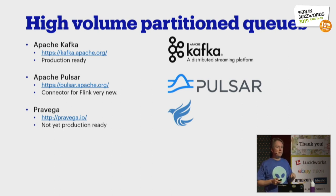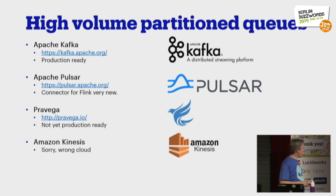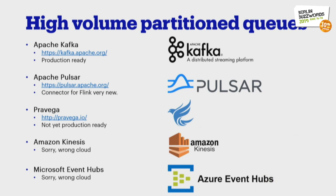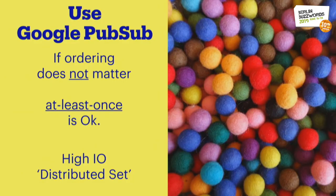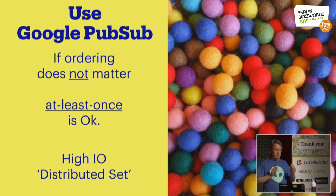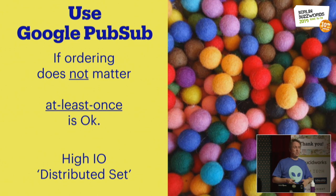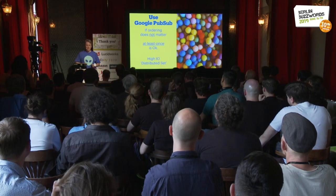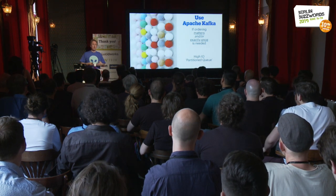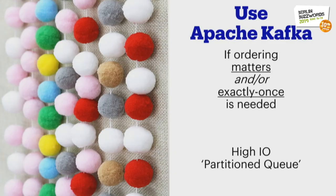We as a company are doing data center and Google Cloud. Amazon has Kinesis — wrong cloud. Microsoft has Event Hubs — wrong cloud. So I tell my colleagues: go ahead and use Google Pub/Sub, because it's a good system as long as you remember that the ordering is messed up and you get at-least-once. Some events come in twice — treat it as a high-I/O distributed set and you're fine. If you need ordering, use Apache Kafka, because then you have ordering maintained, and in combination with Apache Flink you can guarantee exactly-once processing.